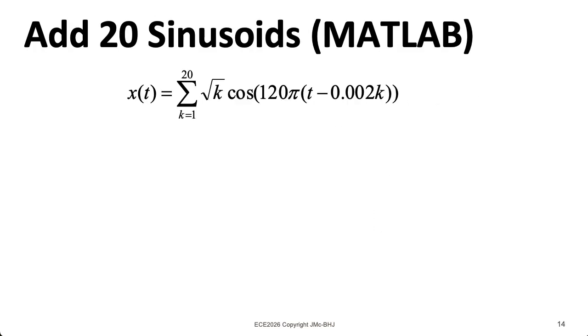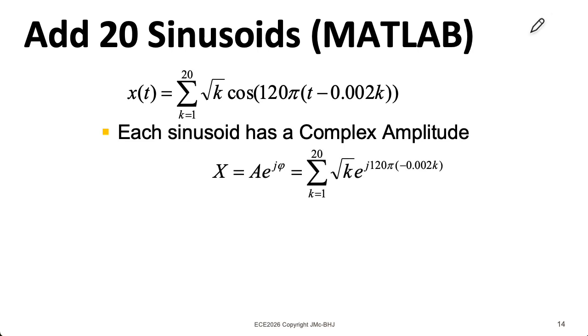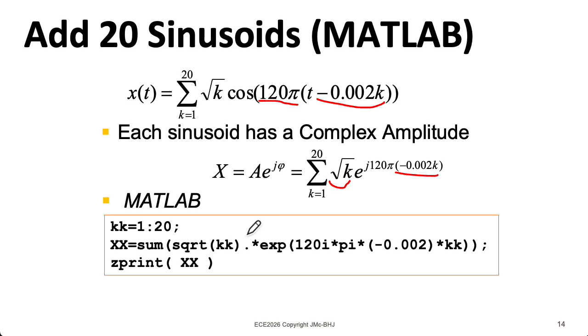Let's say you wanted to add up these 20 sinusoids. Well, that would be a real pain. For something like that, you might want to ask MATLAB. So the phasors are going to have square root of k for their magnitude, and for the angles, we'll have the frequency of 120π times these time shifts. So those are given here. And now it's just a matter of how you would write this in MATLAB. So if you haven't used MATLAB before, this 1 colon 20 notation will create a vector 1, 2, 3, 4, up to 20.